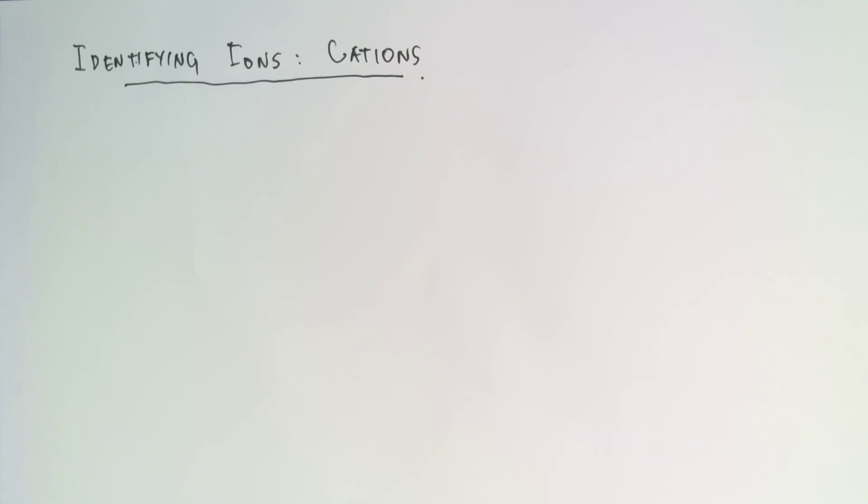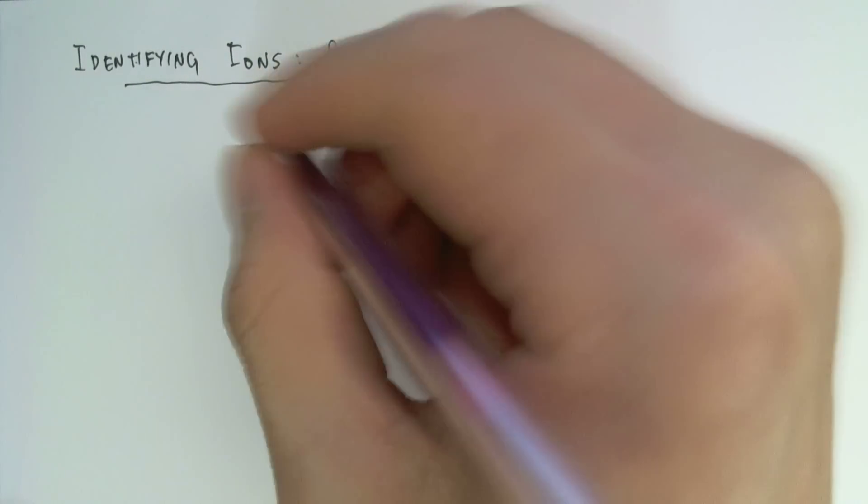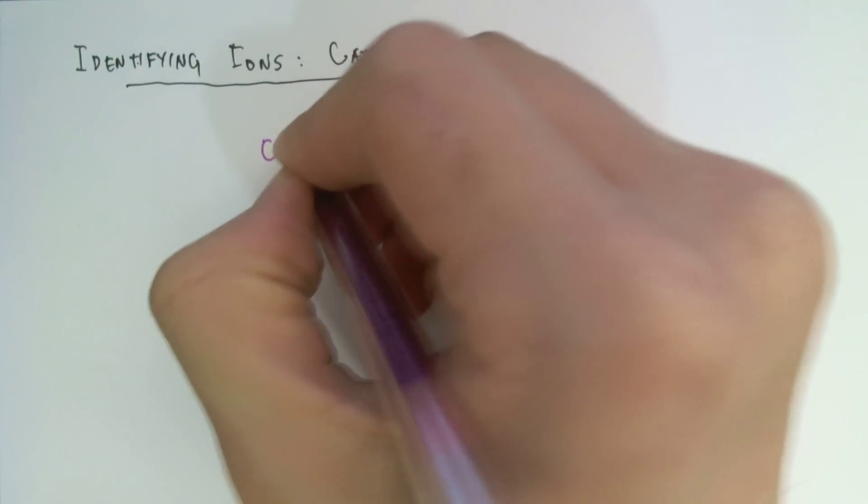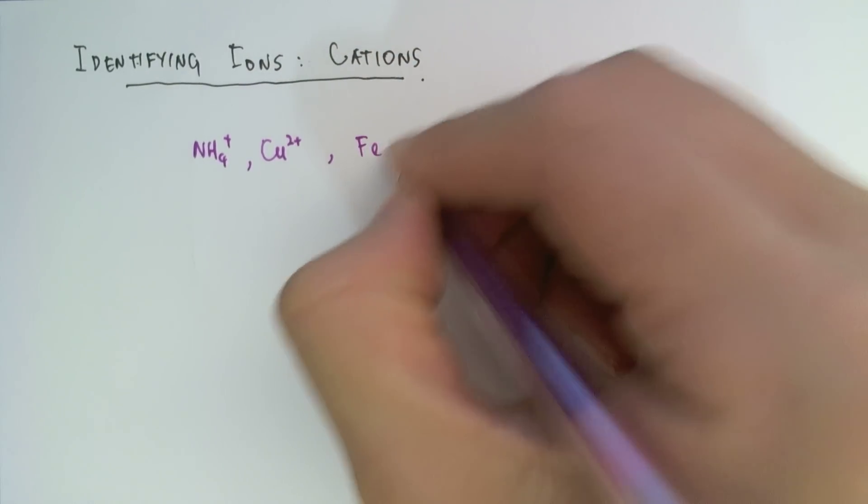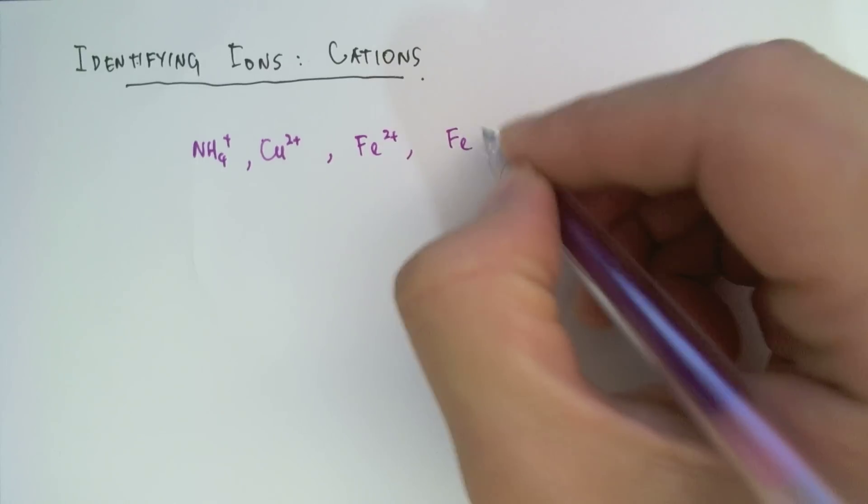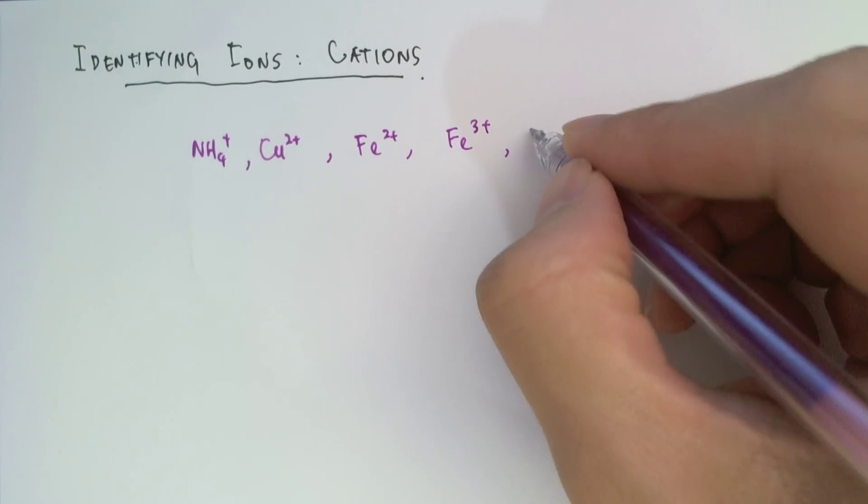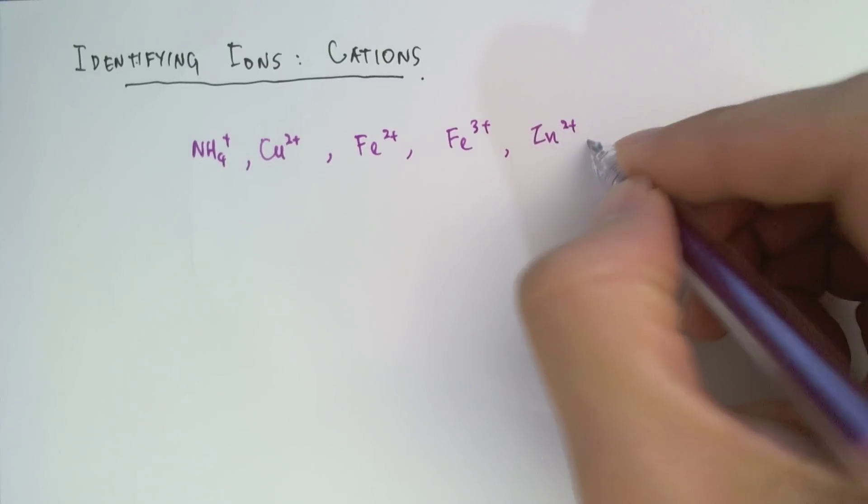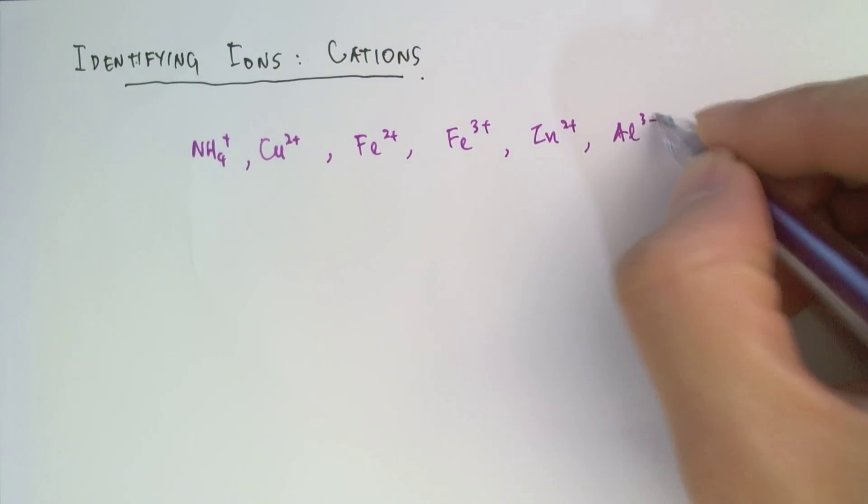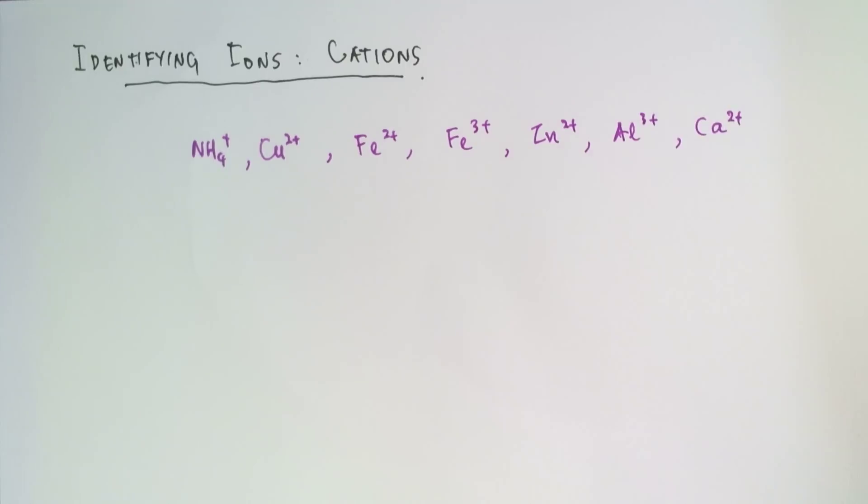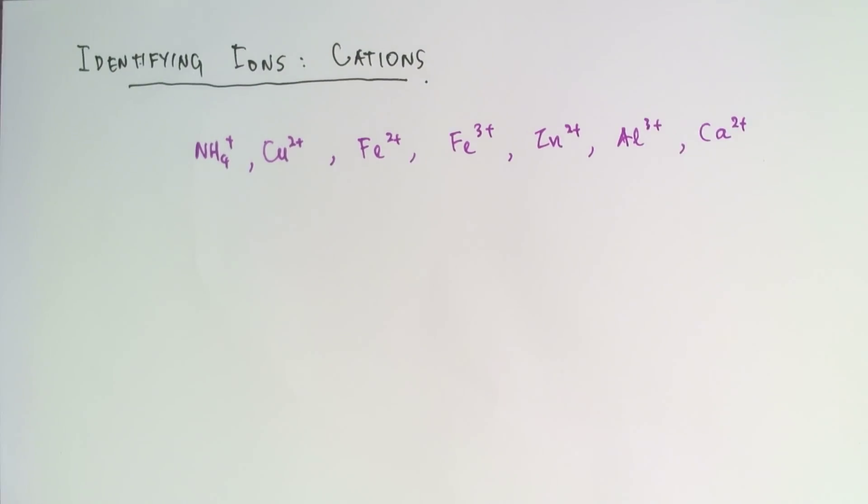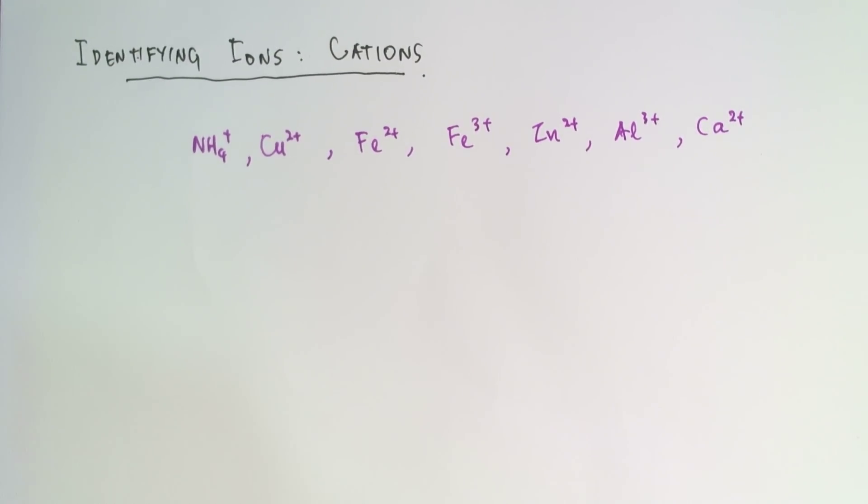There are seven ions that we wish to consider today. They are ammonium, copper 2+, iron 2+, iron 3+, zinc 2+, aluminum 3+, and calcium 2+. So we'll be looking in turn at each of these seven ions individually.